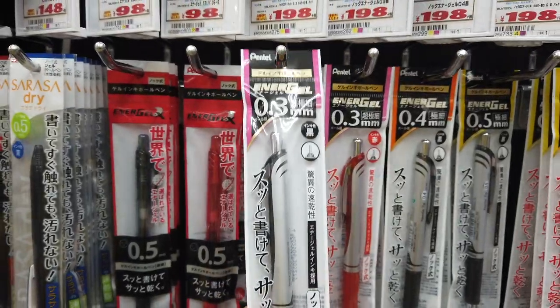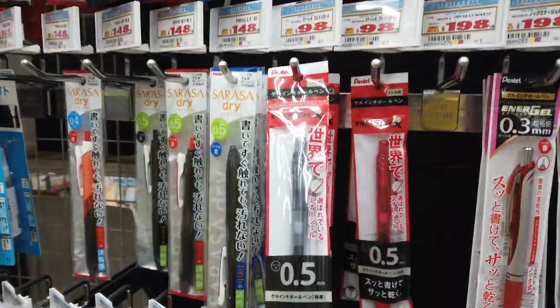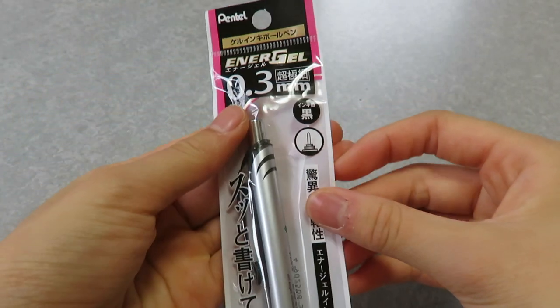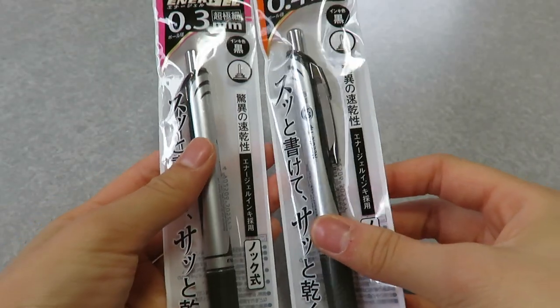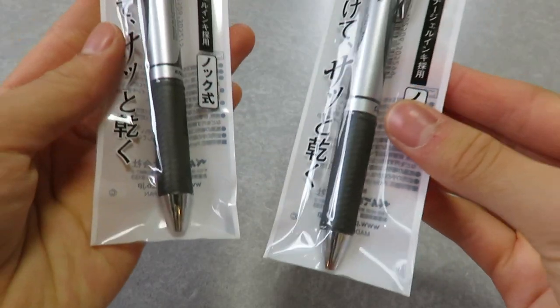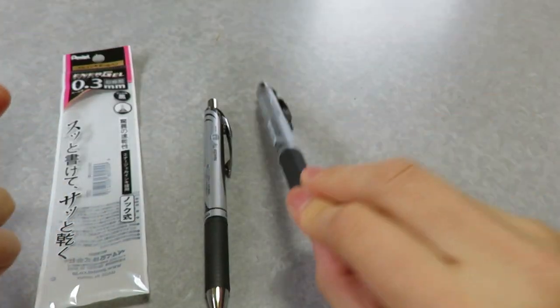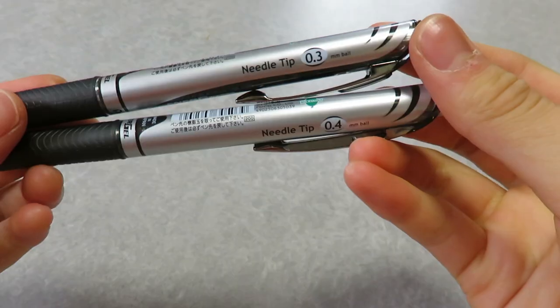The first three pens that I got are obviously the Pentel Energel pens. If you've watched any of my videos, you know that that is my favorite pen of all time. Even though I actually found very good pens this time around in Japan, so make sure you watch till the very end as I will have many more pen recommendations. Anyways, with the Pentel Energel, I got them in the size 0.3, 0.4 and 0.5.